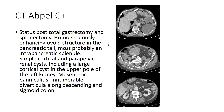Additionally, this patient was found to be status post total gastrectomy and splenectomy. There is a homogeneously enhancing ovoid structure in the pancreatic tail, most probably an intrapancreatic splenule. The patient also has cortical and parapelvic renal cysts, including a large cortical cyst in the upper pole of the left kidney. There is also mesenteric paniculitis and innumerable diverticula along the descending and sigmoid colon.